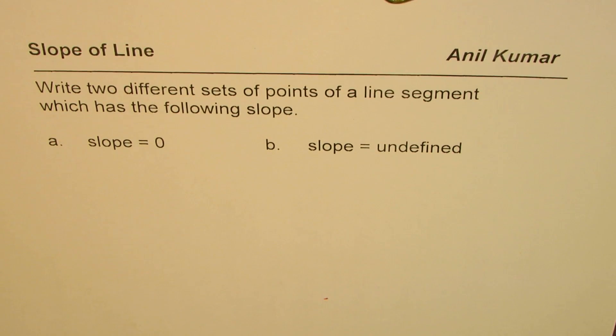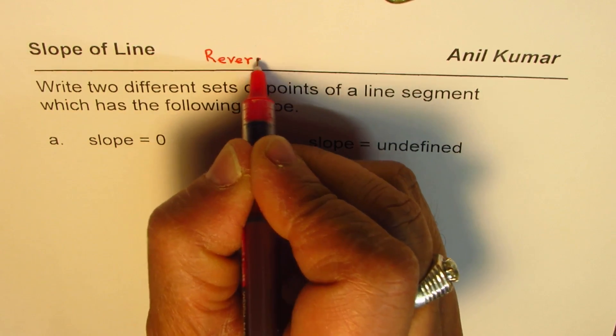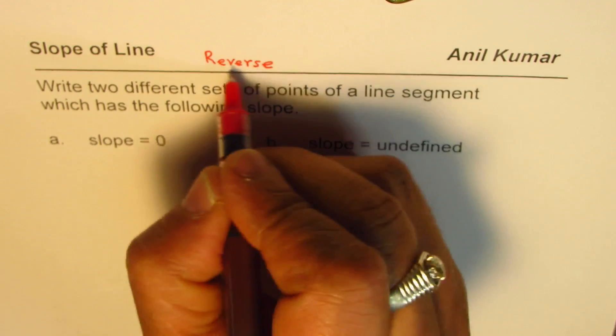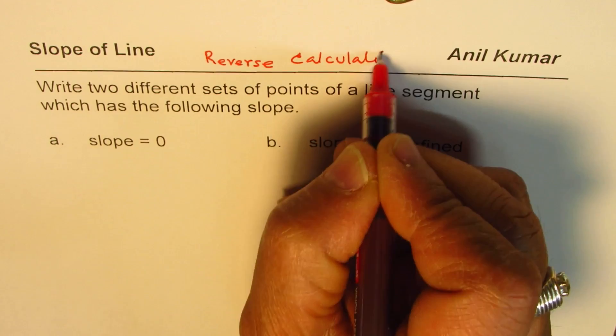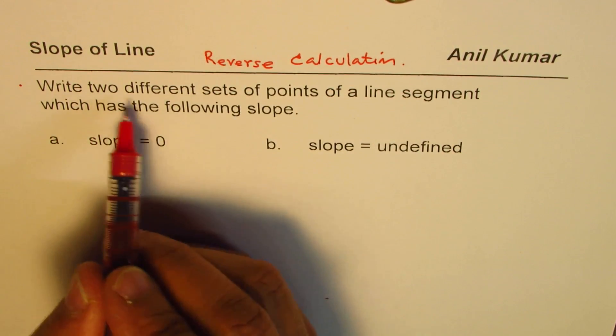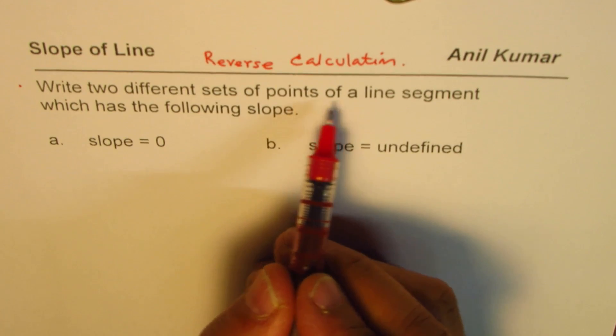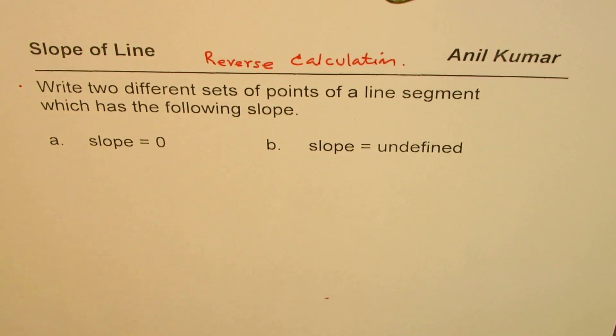I'm Anil Kumar and here is a very interesting question on slope of line. We are actually doing reverse calculation in this. The question here is: write two different sets of points of a line segment which has the following slope.